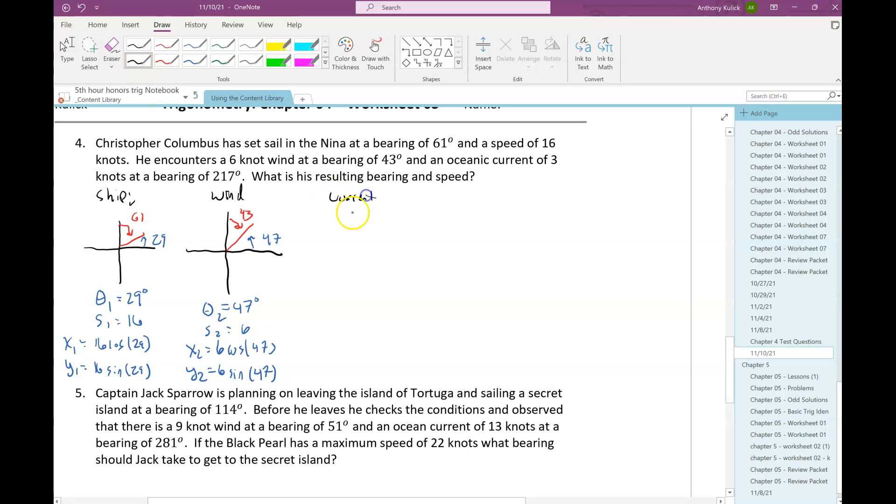And then we have this current. And that bearing is 217. So that's going to be like down here somewhere is 90, 90 is 180, and then like 37 more. So this is my standard position. So 90, 90, and then that would be 53. So 90 plus 90 plus 53 is 233. And that speed we're told is 3. So the horizontal component is 3 times cosine 233 and 3 times sine 233.